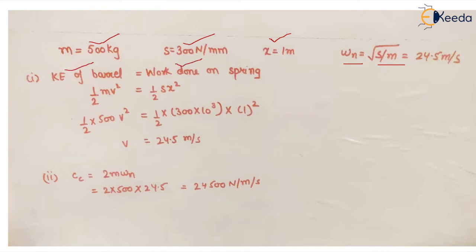Whatever is the kinetic energy, it will be converted into potential energy. So potential energy is the strain energy of the system. So half mv square becomes equal to half spring stiffness, that is s, into x square.